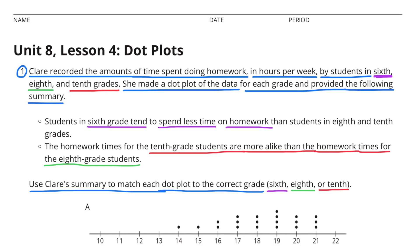She made a dot plot of the data for each grade and provided the following summary. Students in 6th grade tend to spend less time on homework than students in 8th and 10th grades. The homework times for the 10th grade students are more alike than the homework times for the 8th grade students. Use Claire's summary to match each dot plot to the correct grade, 6th, 8th, or 10th.